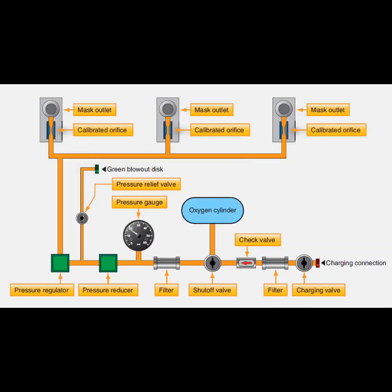What are the components of a continuous flow oxygen system? High pressure cylinder, high pressure lines, reducing valve, calibrated orifice, and rebreather mask.